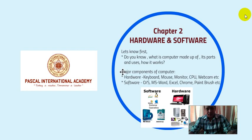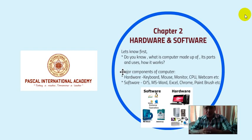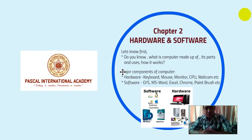Hello Class 5 students, welcome to the offline virtual class. In the last chapter, Chapter 1, we talked about a computer overview — the origin, how it came, the name of the computer, how it works, its definition, and the basic parts like keyboard and mouse. We also covered characteristics like speed, accuracy, and intelligence, and the fields where computers are used, like schools, colleges, banks, and hospitals.